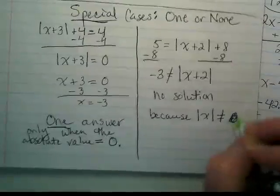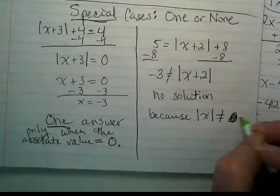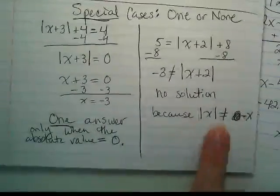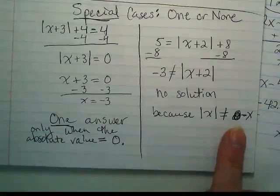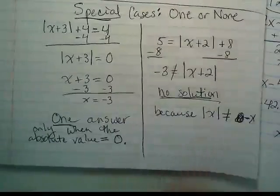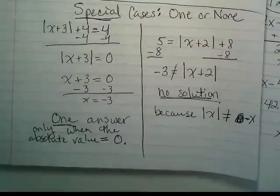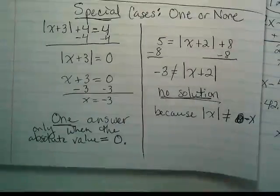There's no solution because an absolute value cannot be equal to zero. I'm sorry, not zero. I'm thinking of the other one. To a negative number. No absolute value is going to be equal to a negative number. So we call this no solution or none. There is no number I can put in for that x that is going to make this absolute value equal to a negative.